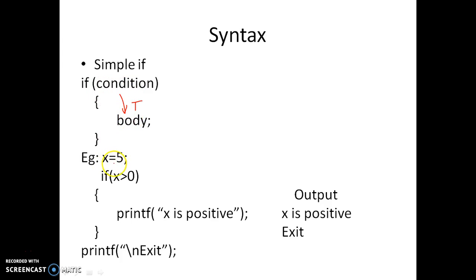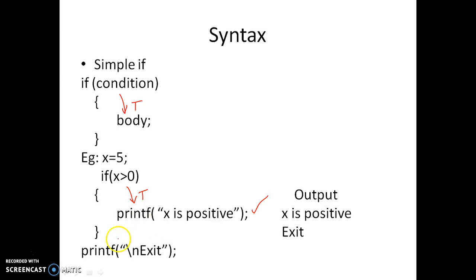You can see an example where we assign x the value 5, and if x is greater than zero it prints 'x is positive'. In this example, x is greater than zero and hence the statement is true, so in the output you see 'x is positive'. This line will be executed, and after executing the statement it will follow sequential operation, which means it will also print the exit statement.